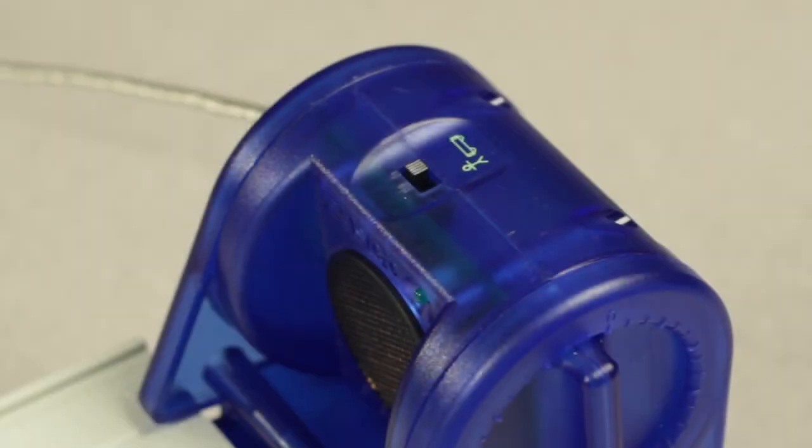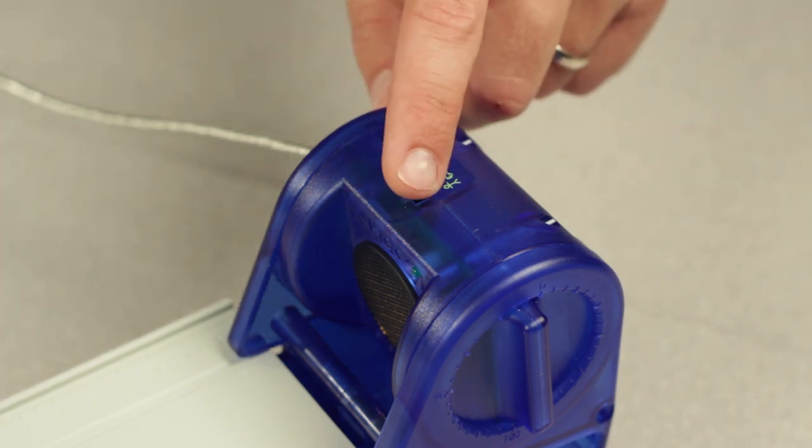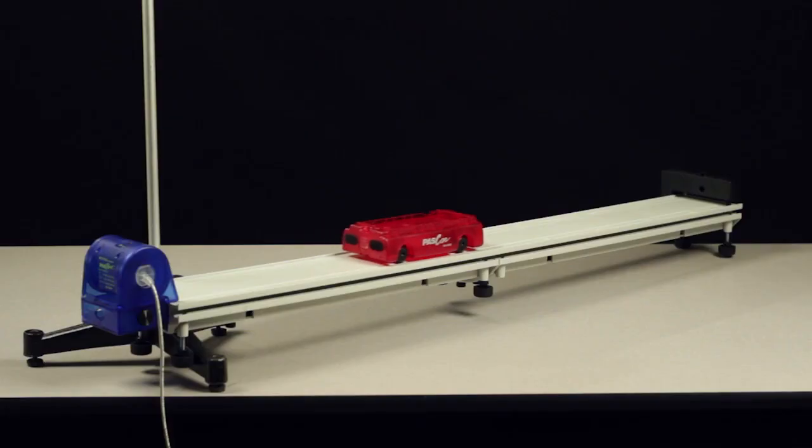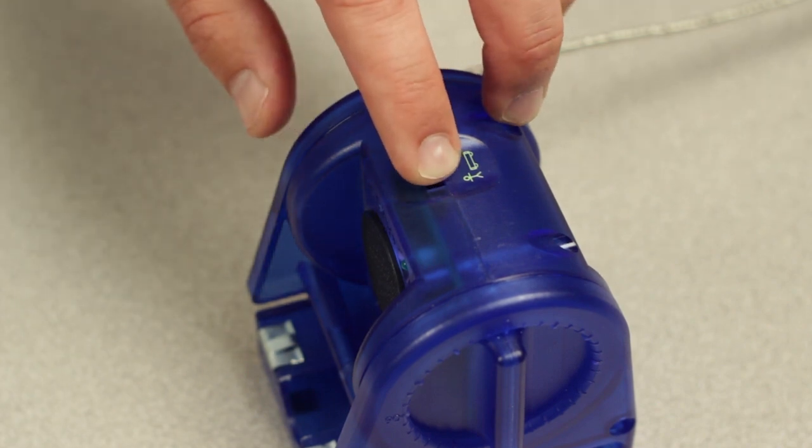On the top of the motion sensor is a selector switch that is used to adjust the range of the sensor when measuring larger objects at longer ranges and smaller objects at shorter ranges. Use the cart setting for smaller, shorter range targets and the person setting for larger, longer range targets.